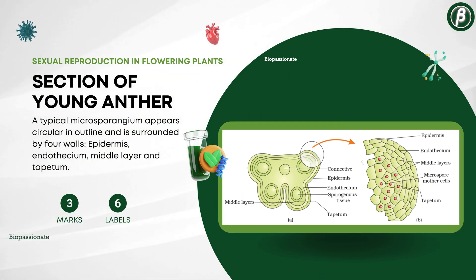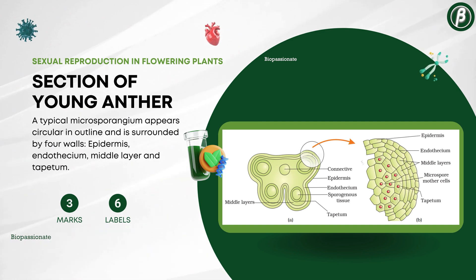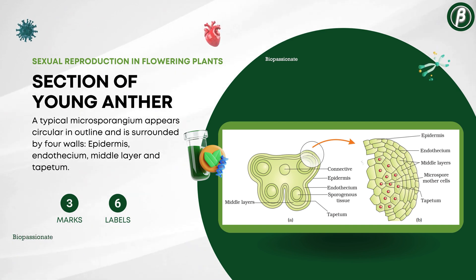Number 1: Section of young anther, for 3 to 5 marks with a minimum of 6 labels.